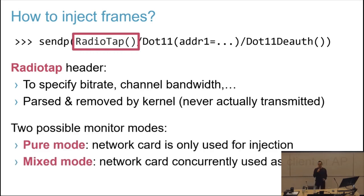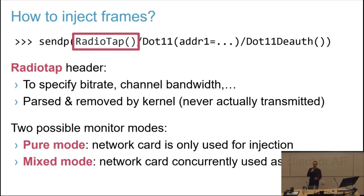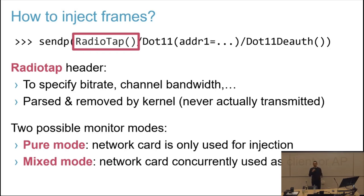The second important thing to realize is that in Linux you can have two types of monitor mode. Monitor mode is a mode where your network card will give you all nearby Wi-Fi frames that it receives, even if it's not the network you're connected to. You can put your network card in monitor mode and do nothing else with it. But there is also a second way: you use your network card as a legitimate client or access point while simultaneously using it in monitor mode to inject frames.